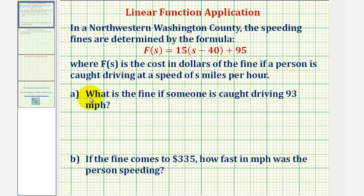So for part a, they're giving us the speed, or s, which is the input into the function. So to answer part a, we'll find f of 93 by substituting 93 for s. So f of 93 is equal to 15 times the quantity 93 minus 40 plus 95.